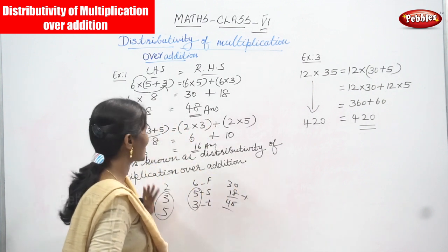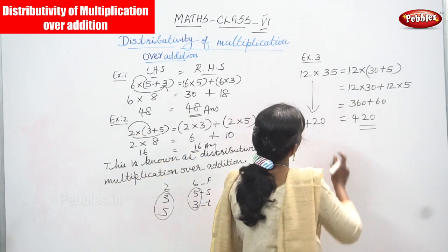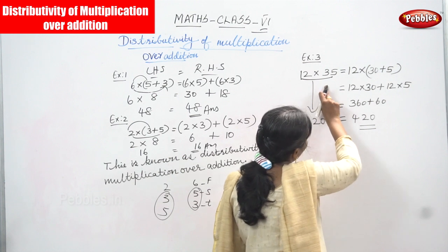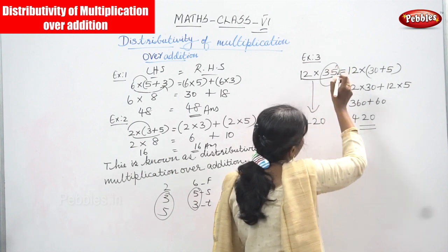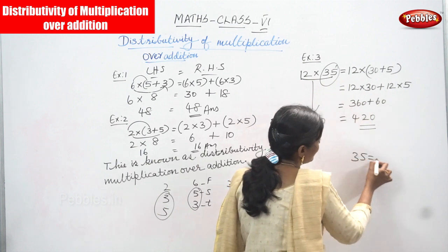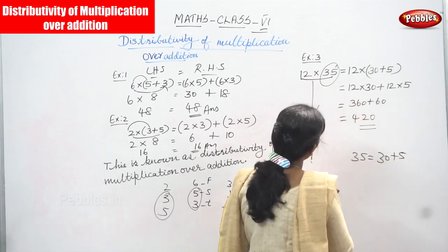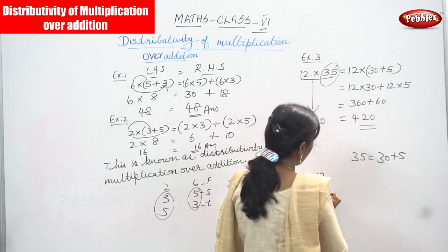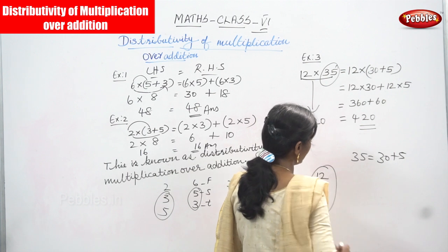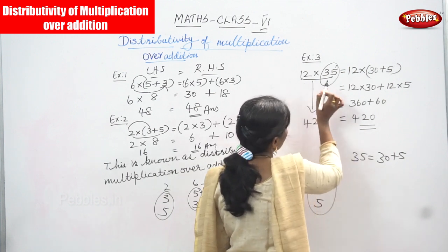Now we are going to see the third example: 12 into 35. We always take the second number and split it, so 35 is going to split into 30 plus 5. Now we have three numbers: 12, 30, and 5. First, multiply 12 into 35 on the left hand side.